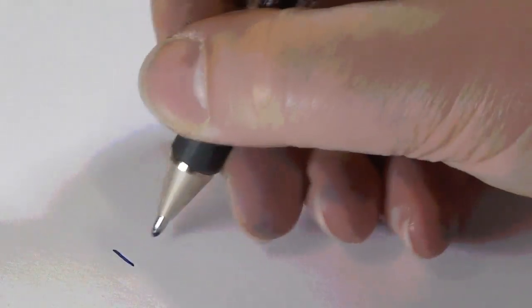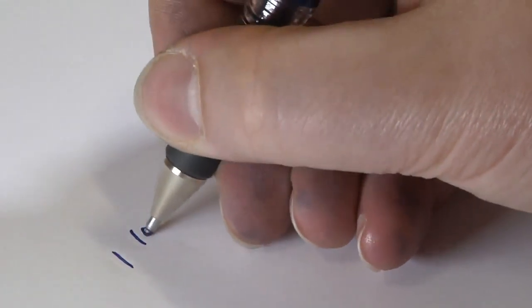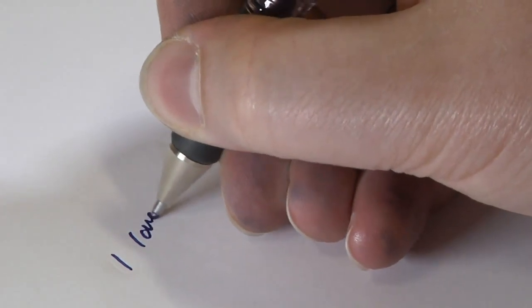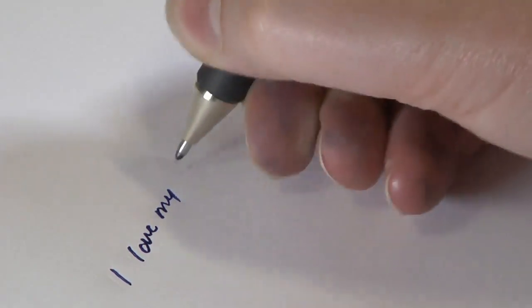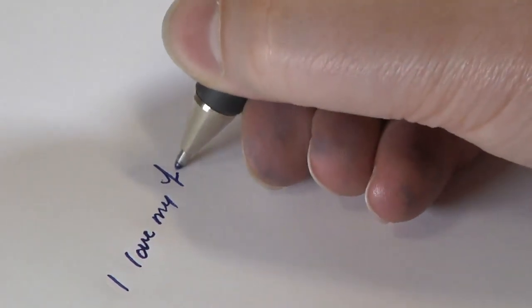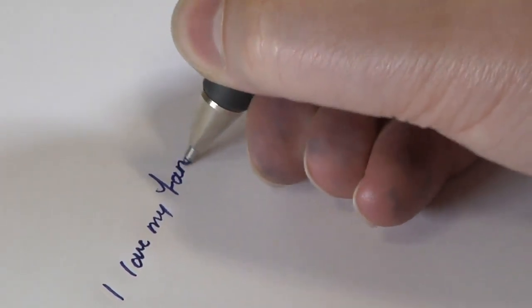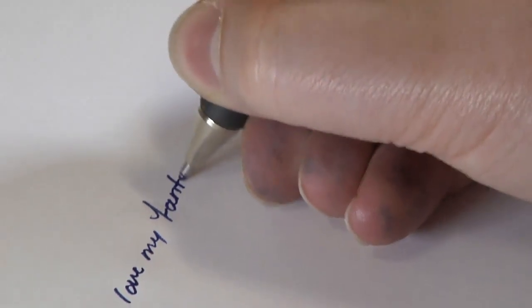These pens use inks that are like a gel rather than a fluid or liquid and usually contain fine particles of color called pigments rather than dyes to give the ink its color. The gel ink is delivered to the paper using a similar metal rolling ball mechanism to that used in the ballpoint and roller ball pen.